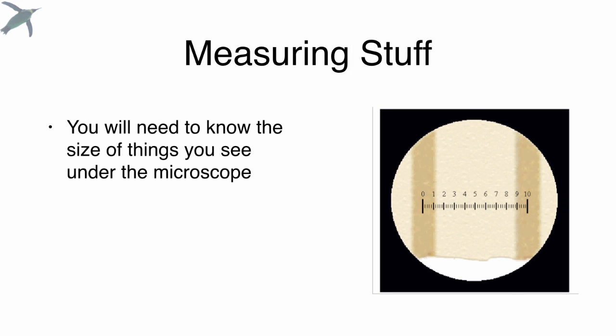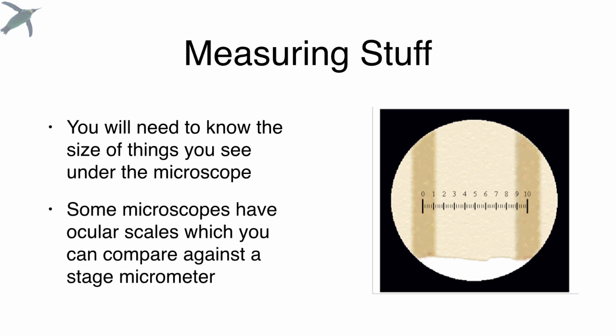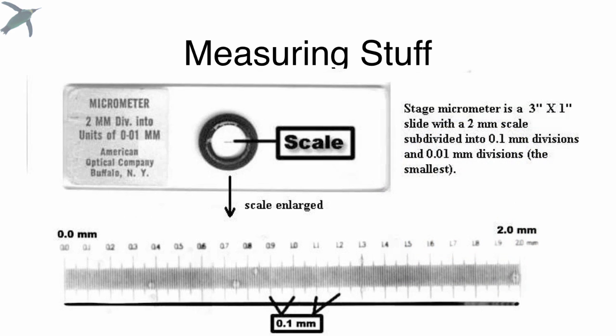You will most likely have to be measuring things under the microscope. You need to know how big things really are. Now some microscopes have ocular scales, like this one. So when you look through that eyepiece, there's a little scale in there, and you can compare that at different magnifications against a micrometer that you put on the stage. This is obviously the best way to go about it, but a lot of student scopes don't have those.